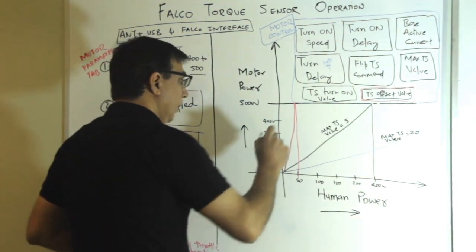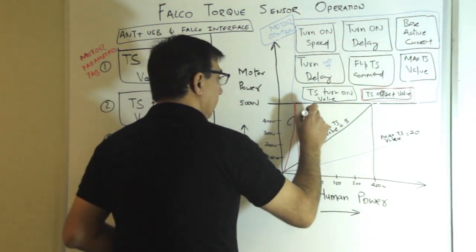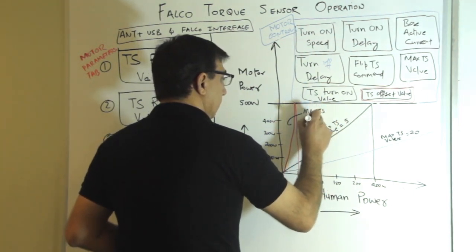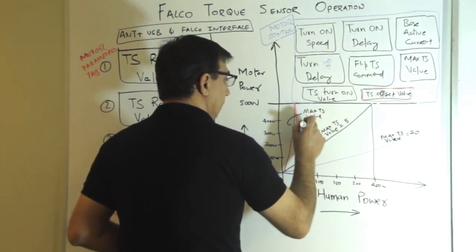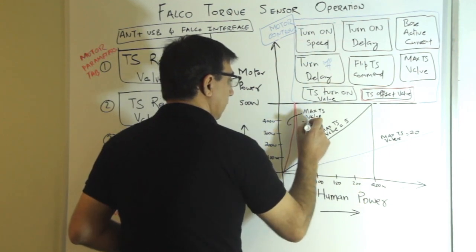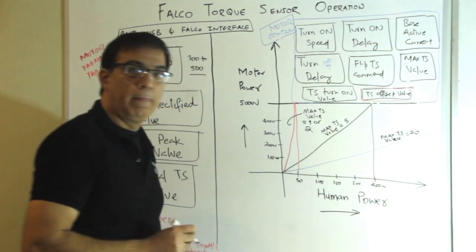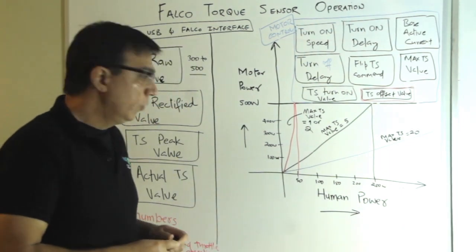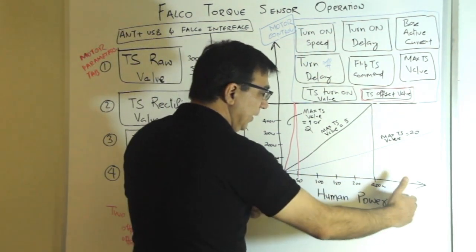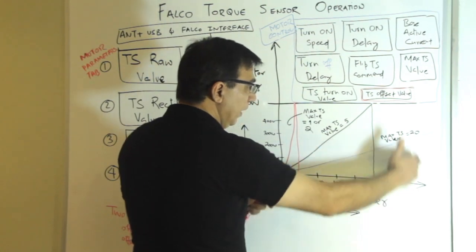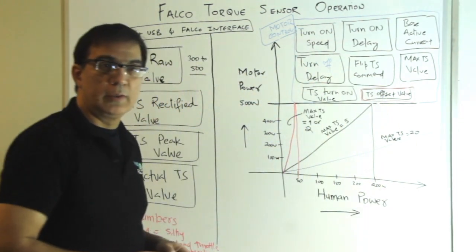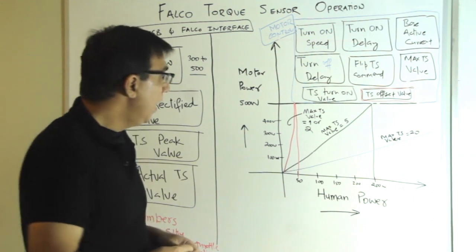And in this case, max TS value is around, let's say, 1 or 2. So depending upon your ability to produce power, you can perfectly match that with the motor.